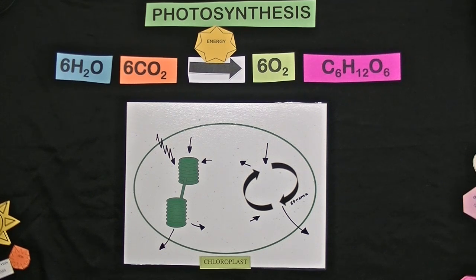Inside the leaves of plants are tiny structures called chloroplasts. Chloroplasts have two main parts, the green thylakoids and the space between the thylakoids called the stroma.